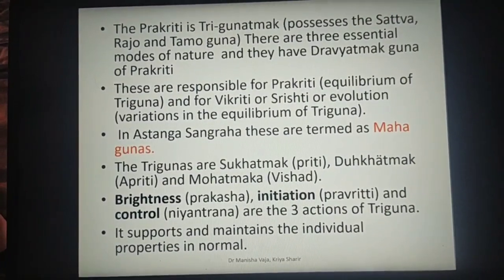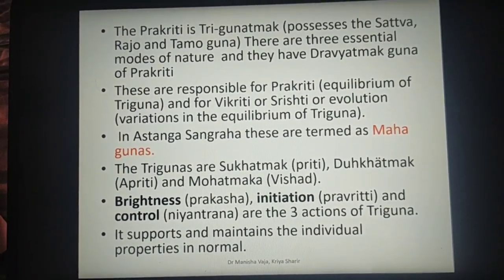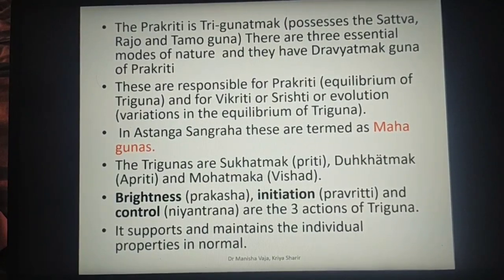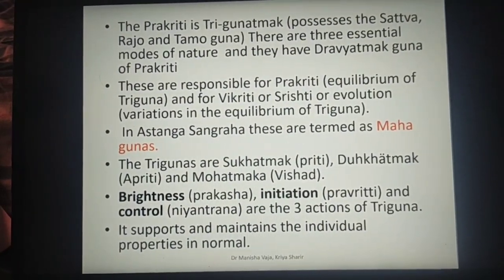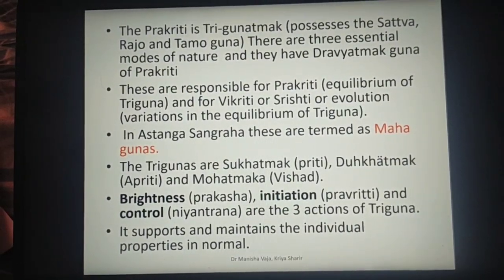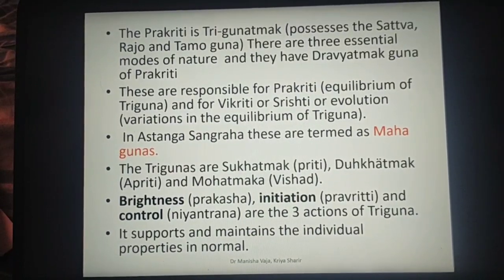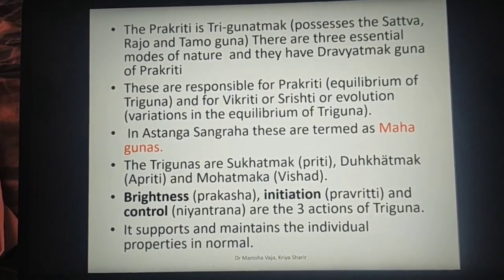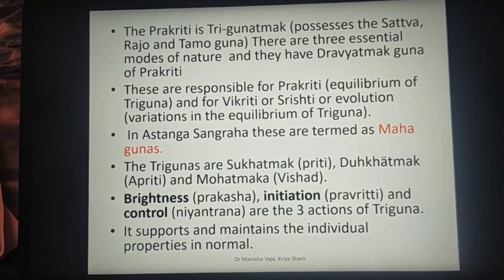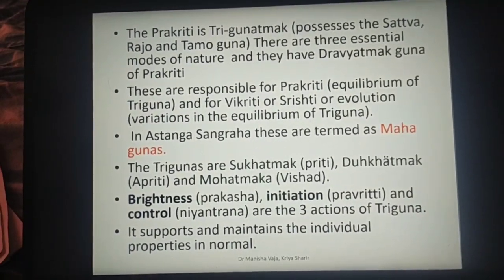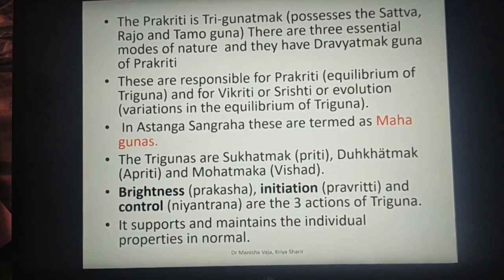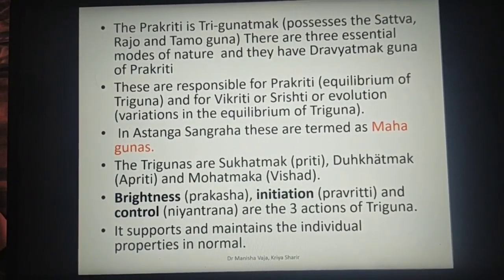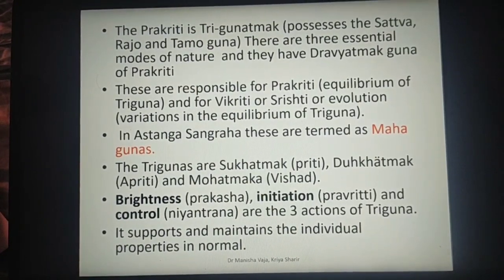The Trigunas are Sukhatmak, Dukhatmak, and Mohatmak. Sattva is Sukhatmak, meaning it creates happiness. Rajas is Dukhatmak, which creates Apriti or disaffection. Tamas Guna creates Moha, which is Mohatmak — a state of Vishad or Udasinta, meaning sorrowness or sadness. The three actions of Triguna are brightness (Prakash), initiation (Pravruti), and control (Niyantran).